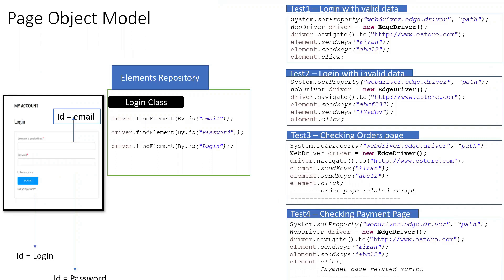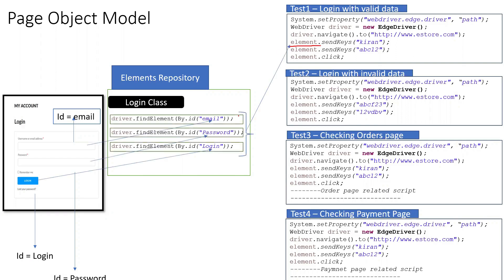In our test project, we will use the main, test, and resources packages. In the main package, we will create a login class. In this class, we will use only elements — driver.findElementBy — just the elements. Then in test1, test2, test3, there is no driver.findElementBy directly. You can find the driver.findElementBy in the login class and call it from there.